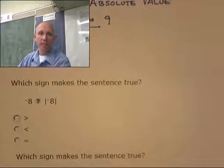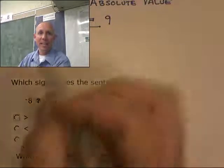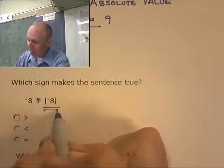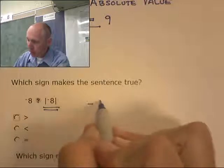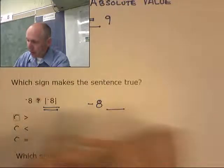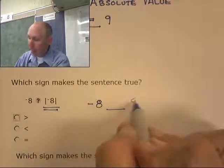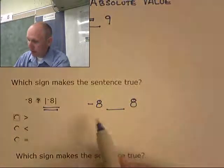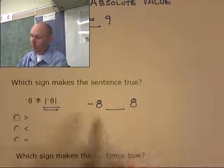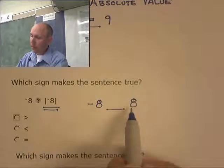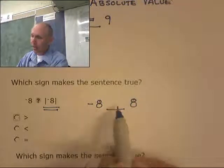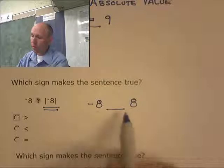How about this one? Once again, let's deal with the absolute value first. It's going to have negative eight something the absolute value of negative eight is eight.